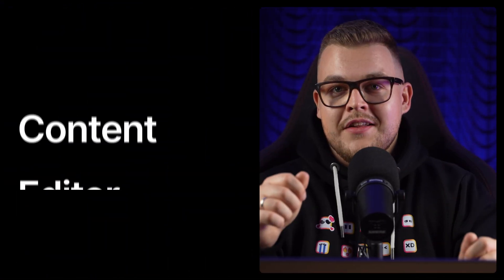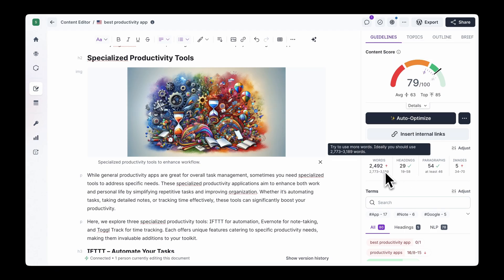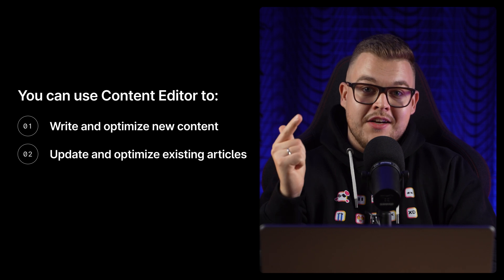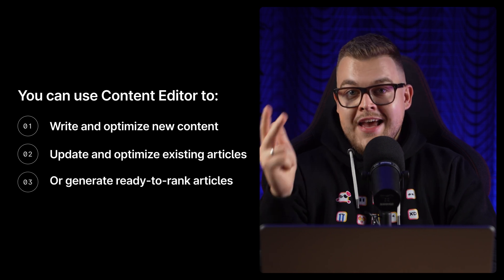Let's kick things off with Surfer's Content Editor, our most popular and beloved product and the first of its kind. You might already be familiar with so-called content scores, but did you know that Surfer was the pioneer in introducing them to the market? In short, this is our content optimization tool. It analyzes top-ranking pages for any given keyword to help you create top-performing content. You can use the Content Editor to write and optimize new content, update and optimize existing articles, or generate ready-to-rank articles with AI.